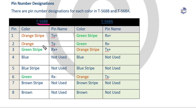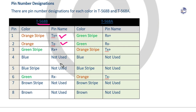Orange white, orange, green white, blue, blue white, green, brown white, brown — this is the color sequence. Orange white and orange are for transmission. Green white and green are for receiving.